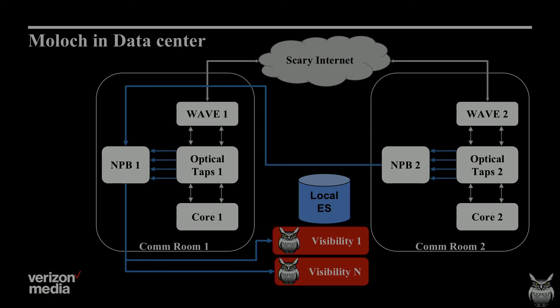A data center deployment is a little more complicated. You usually have two network rooms or comm rooms that are physically separated from each other, and instead of span ports, you're probably going to use optical taps. In this example, we're tapping between our core routers and the wave gear. Those are going to forward the traffic to your NPBs. Because of those two separate rooms, we usually suggest you use daisy-chained NPBs — MPB2 in comm room 2 forwards the traffic to MPB1 in comm room 1, which forwards it to the visibility boxes. This is really important because you want to make sure all the packets for the same session end up on the same visibility box. The other big difference is you're usually going to use an Elasticsearch cluster local to that data center.